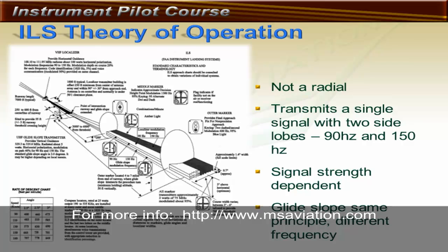The glide slope works the same way as the localizer — it is also signal strength dependent. However, glide slope transmitters transmit in the UHF band for finer resolution of the signal, with the disadvantage that the glide slope signal cannot be received as far as the localizer signal.